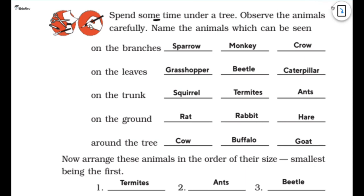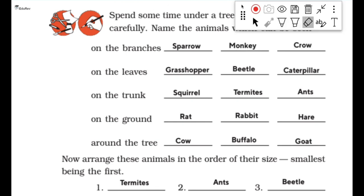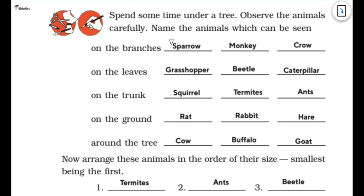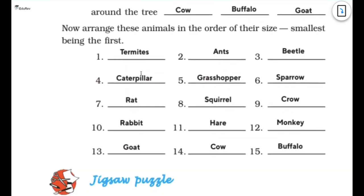Spend some time under a tree and observe the animals carefully. Name the animals which can be seen. So on the branches we can have sparrow, monkey and crow. On leaves we can have grasshopper, beetle and caterpillar. On trunk we can have squirrel, termites and ants. On the ground I can have rat, rabbit and hare. Around the tree we can have cow, buffalo and goat. Now arrange these animals in the order of their size, smallest being the first. So it will be termites, ants, then beetle, then caterpillar, grasshopper, sparrow, then rat, squirrel, crow, rabbit, hare, monkey, goat, cow and finally buffalo.